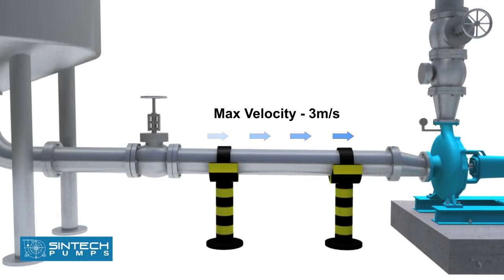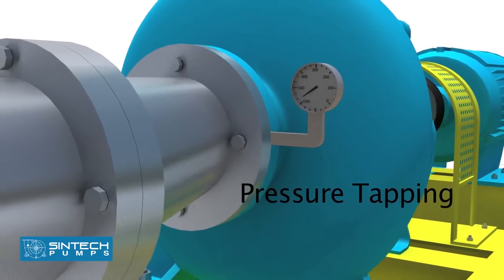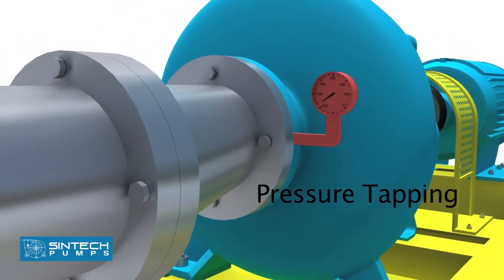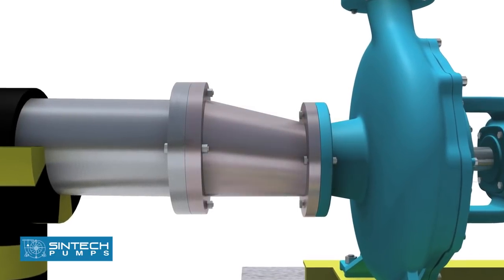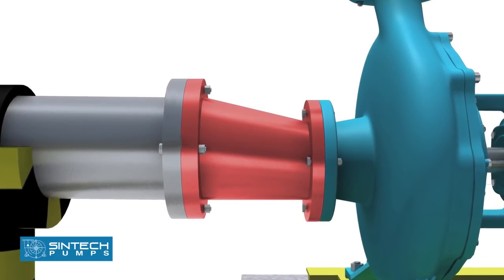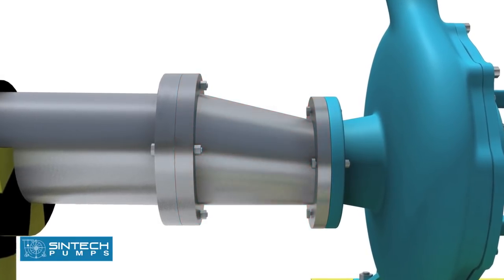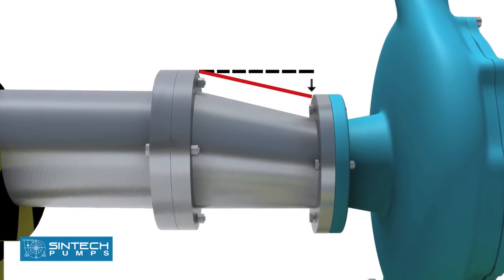The suction pipe should be sized to ensure a liquid velocity of not more than 3 meters per second. There should be a tapping provided for installing a pressure gauge in the suction line. The reducer joining the straight length of the pipe in the pump line should be an eccentric reducer with the inclined side of the reducer as the top side.